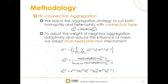In the aggregation strategy, to aggregate both homophilic and heterophilic connections, we use a connection type weight MU_V to make homophilic neighbors transmit a positive message, while heterophilic neighbors transmit a negative message. To adjust the width of neighbor aggregation adaptively and reduce the influence of noise, we adopt a multi-head attention mechanism to set the aggregation weights. The main formulas are shown in the slides.